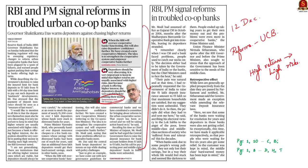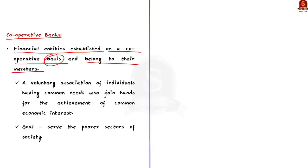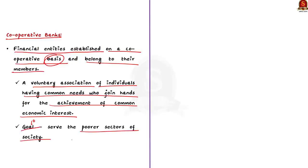In this context, let us understand what cooperative banks are and the difference between normal banks and cooperative banks. Cooperative banks are financial entities established on a cooperative basis and they belong to their members. A cooperative bank is a voluntary association of individuals having common needs who join hands for the achievement of common economic interest. Its primary goal is to serve the poor sectors of society by using the principles of self-help and mutual support.